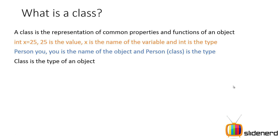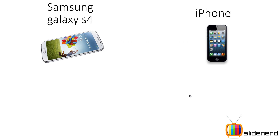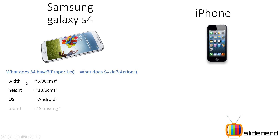If you're a bit uncomfortable with this, don't worry — as we discuss more examples this will be very clear. Let's try to identify the class from two mobile phones: the Samsung Galaxy S4 and the iPhone. What properties does your S4 have? Width is 6.98, height is 13.6, OS is Android, brand is Samsung, price is 1000 — and there are many other properties, but here I've taken five of them.